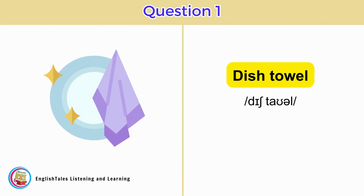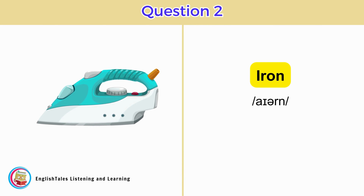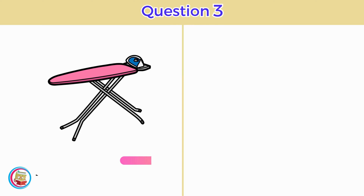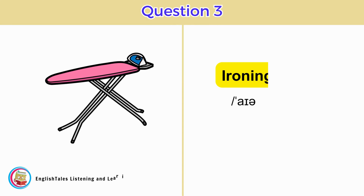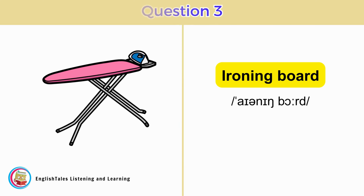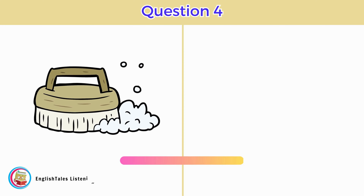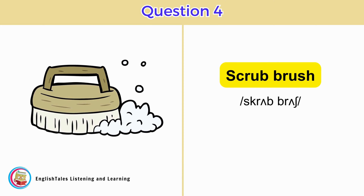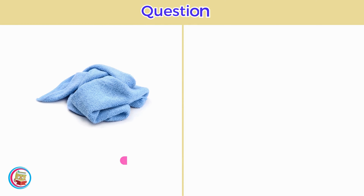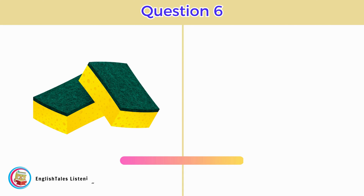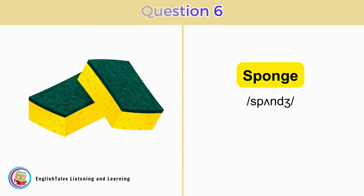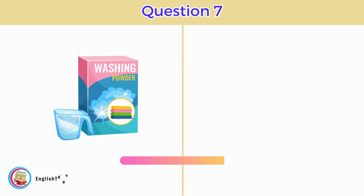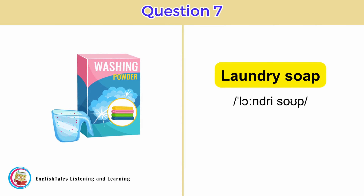Dish Towel. Iron. Ironing Board. Scrub Brush. Cloth. Sponge. Laundry Soap.